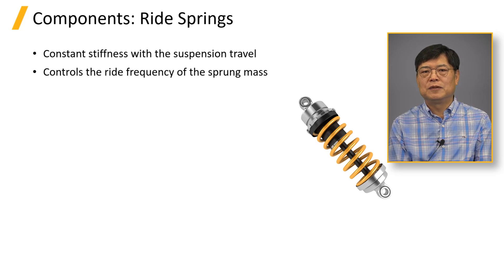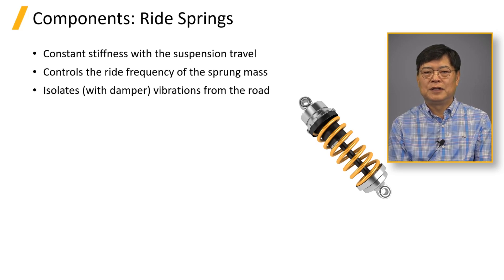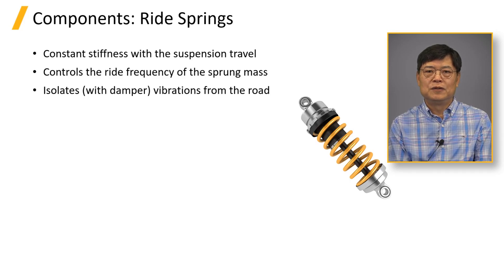The ride spring with a damper attenuates the rough road vibration higher than the ride frequency. Small cars of light weights have soft spring rate to match the ride frequency target. Fully loaded passengers and cargo increase the sprung mass and decrease the ride frequency substantially.